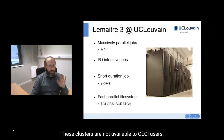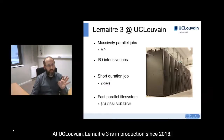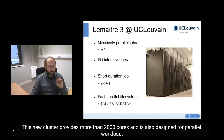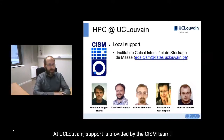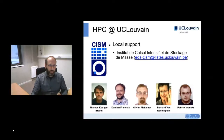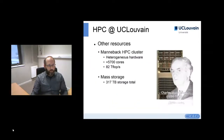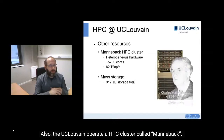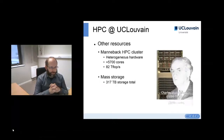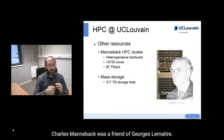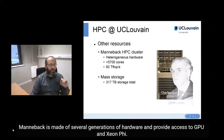At UCLouvain, Lemaitre 3 has been in production since 2018. This cluster provides more than 2000 cores and is designed for parallel workloads. Support at UCLouvain is provided by the CISM team. UCLouvain also operates an HPC cluster called Manneback — Charle Manneback was, in fact, a friend of Georges Lemaître. Manneback is made of several generations of hardware and provides access to GPU as well as Xeon Phi cards. This cluster is not available to CECI users.